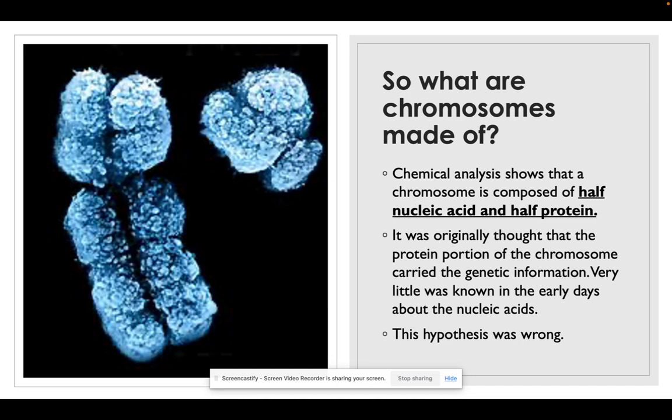So what are chromosomes made of? Chemical analysis has shown us that the chromosome is half composed of nucleic acid and half protein. It was originally thought to be the protein portion that carried genetic information because very little was known about nucleic acids. Obviously the hypothesis was wrong and you'll find that out here shortly.